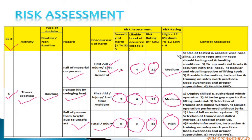The control measures for falling material include: use of tested and capable wire rope slings; wire rope and PP rope should be in good healthy condition; tie up material firmly and securely with the rope; regular and visual inspection of lifting tools; provide information, instruction, and training on safe work practices; keep awareness and proper supervision; and provide proper PPE.